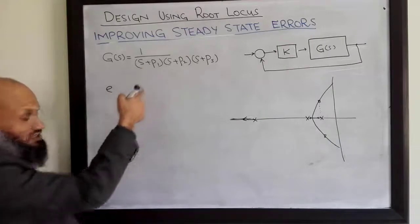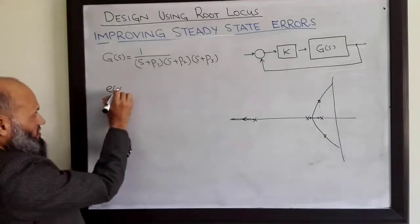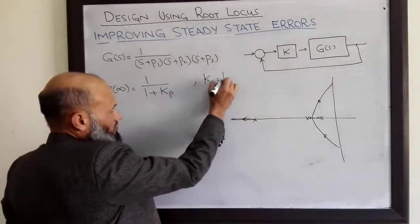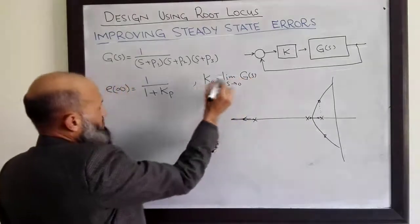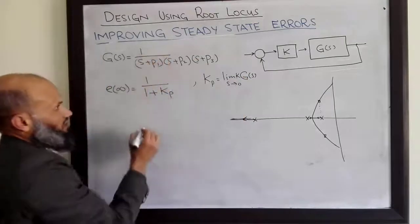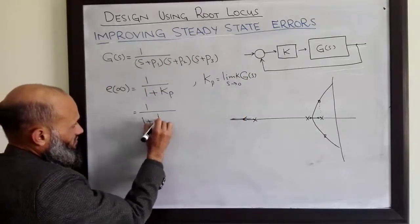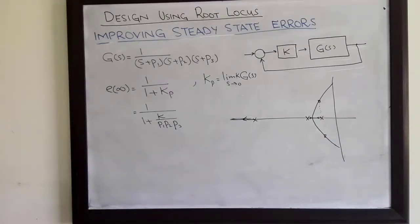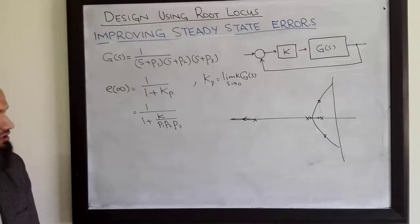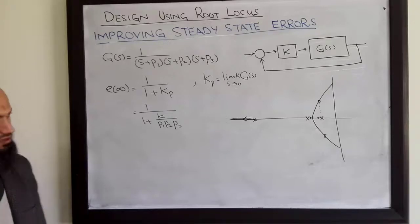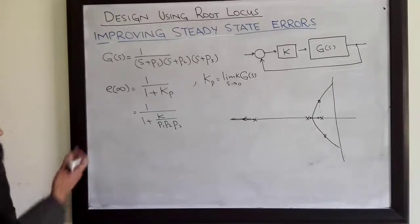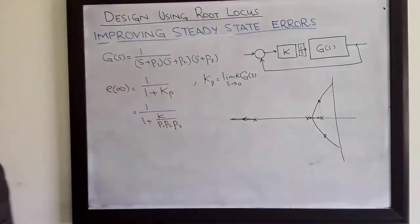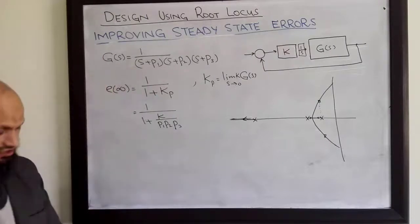What we want to do is improve the steady state error. For this particular system, we can see it is a type zero system, so steady state error for a step input is given by 1 over (1 + Kp), where Kp equals the limit as S goes to 0 of G(S). This equals 1 over (1 + K over P1·P2·P3), which is non-zero. If we can somehow improve the type of the system, the steady state error will be reduced — so what if we add an integrator? By adding an integrator, the type of the system increases and steady state error decreases.